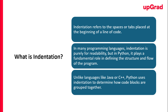Unlike languages like Java or C++, Python uses indentation. In the most basic sense, indentation is giving spaces so that Python or the compiler would know what space to be given, when it needs to be given, and what it represents. Python uses indentation to determine how code blocks are grouped together.